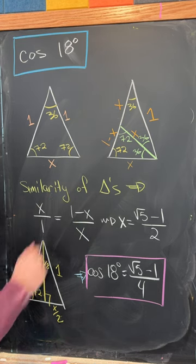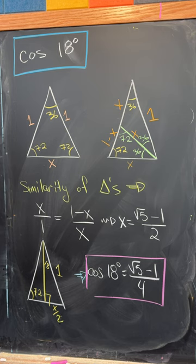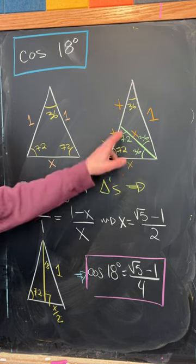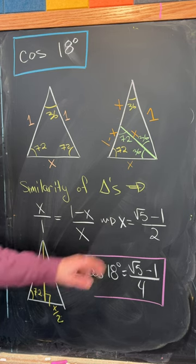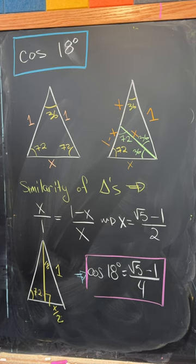And thus, this length right here is 1 minus x. Now by the similarity of the small triangle and the large triangle, we know that x over 1 equals 1 minus x over x, which we can solve to root 5 minus 1 over 2.